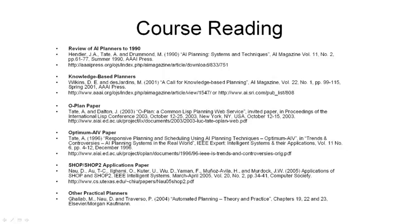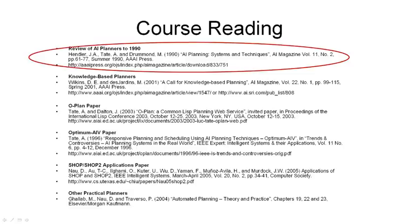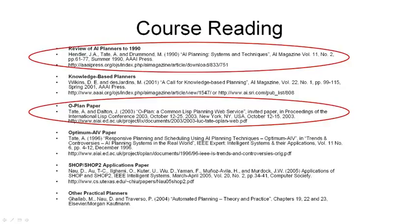There are a number of readings — some of them very short — on specific planners and their applications. We hope you might dip into these during the course. If you've got time to read just a couple, these are the suggested ones: the initial review of AI planners to 1990, and a very short paper on O-Plan, one of the Edinburgh planners, which looks at a wide range of techniques and applications that were in use in that system.